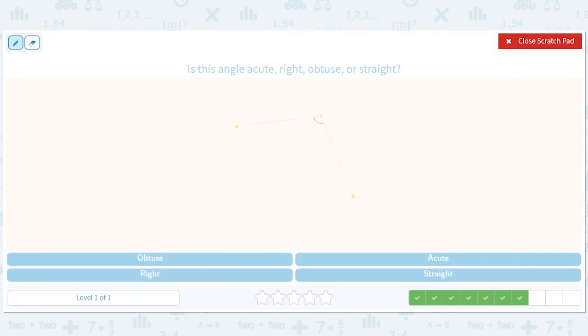And this is a little bit bigger than a right triangle, right angle. Sorry, I keep saying right triangle. There's no triangle here. So if it's a little bit bigger, then it would be obtuse.